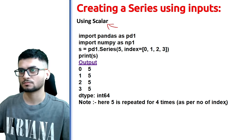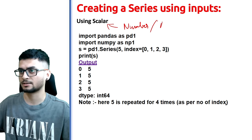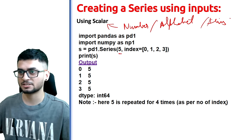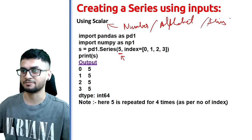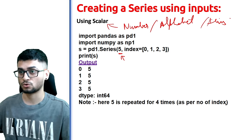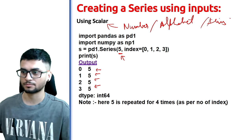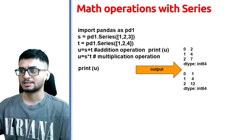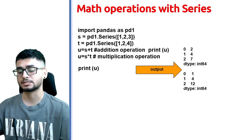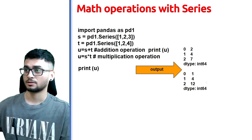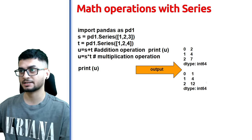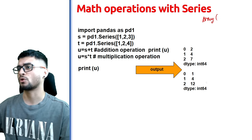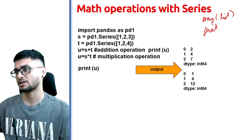Using a scalar means a single number, alphabet, or string. For example, if you pass just the value 5 with an index list, all of the values in the series will be 5. So in summary, you can create a series using an empty series, an array or list, a dictionary, or a scalar value.